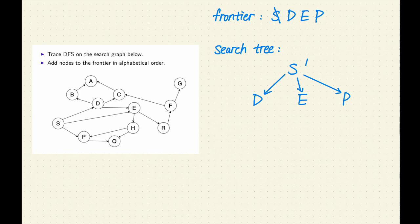Step 2. The most recent node added to the frontier was P. Let's label P as the second node expanded. Remove P from the frontier. P is not a goal. Let's expand P. P has one successor, Q. Let's add Q to the frontier and to the search tree.